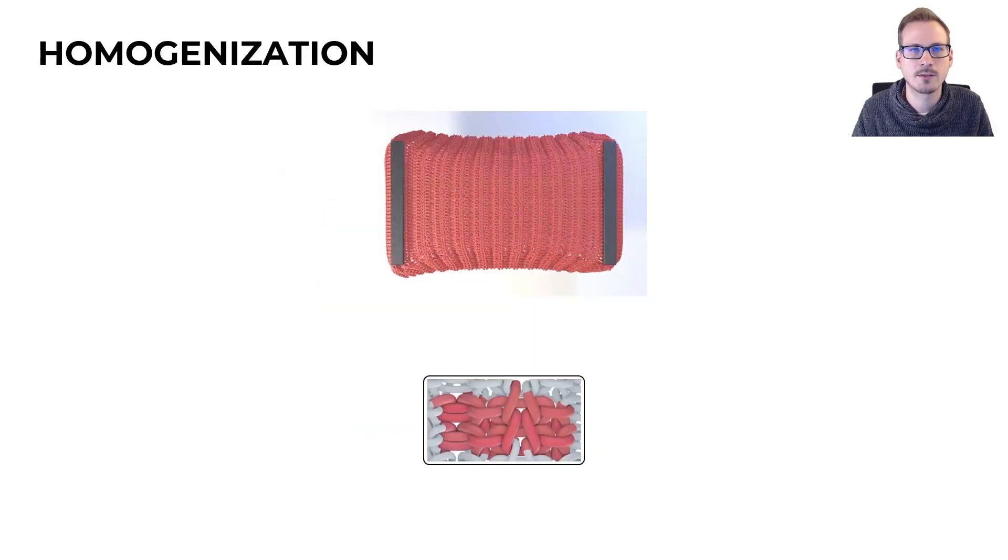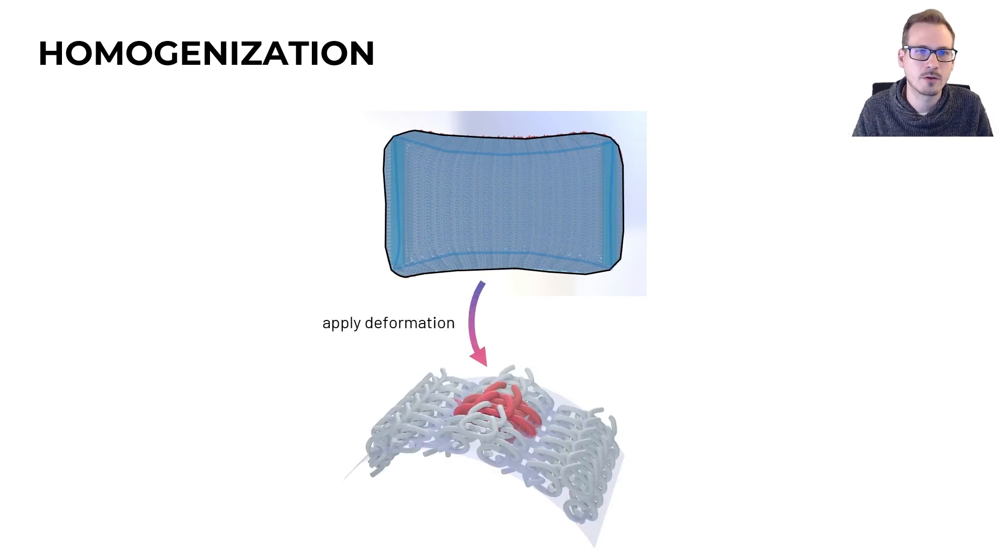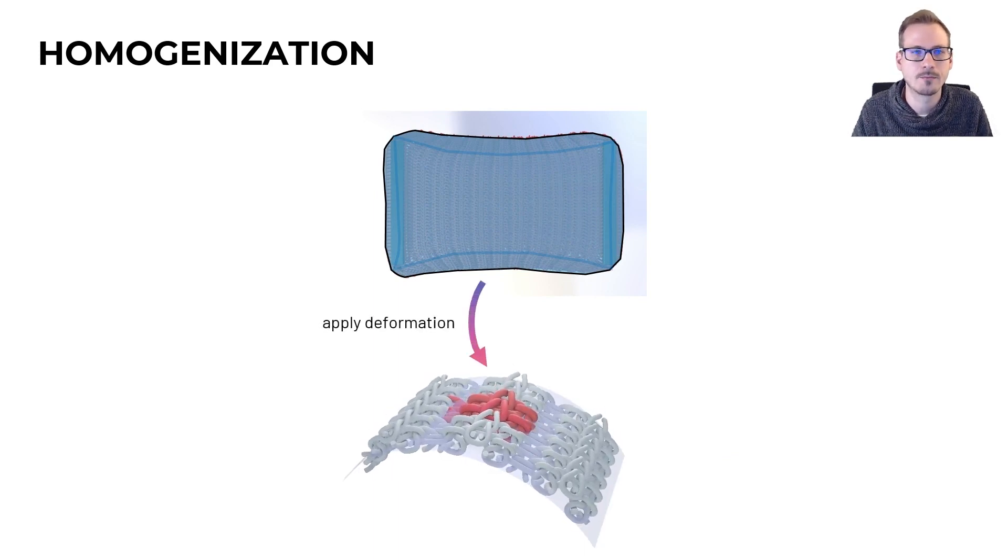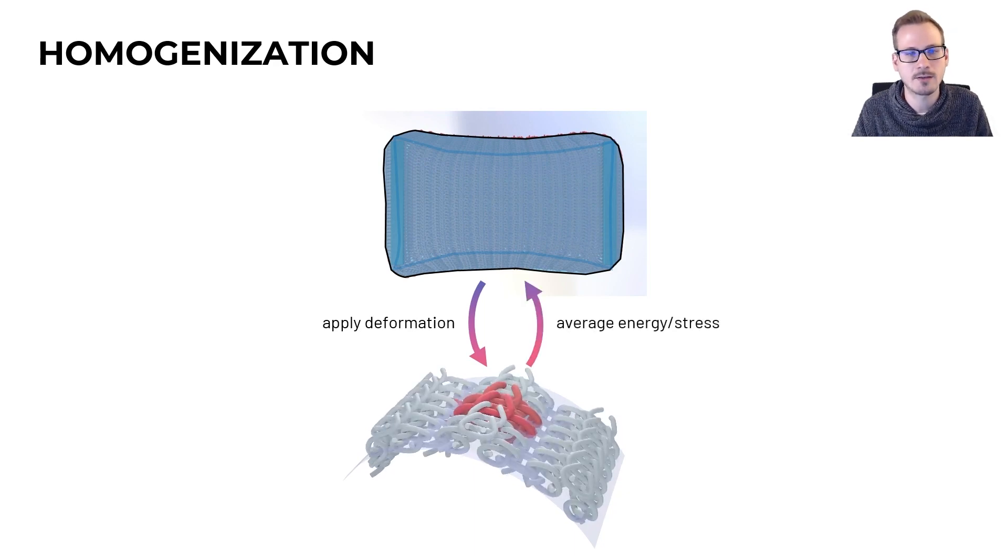In my thesis, we use homogenization to investigate the connection between the small-scale structure and the large-scale behavior. For this, we abstract the cloth into a shell model, and we then apply deformation to a representative periodic tile. We simulate how the yarns react, and finally measure an average elastic response.